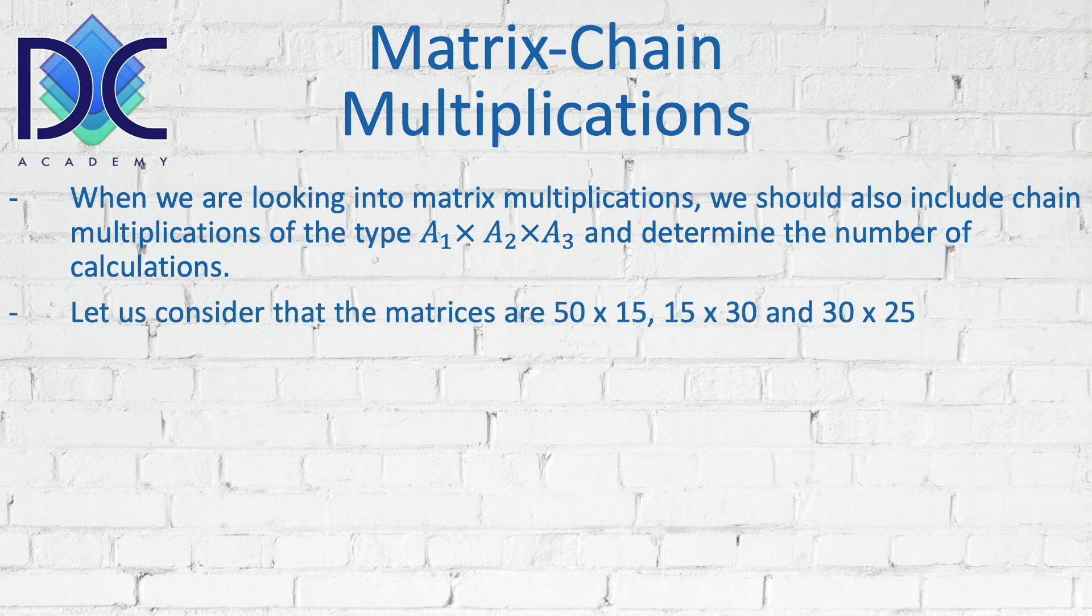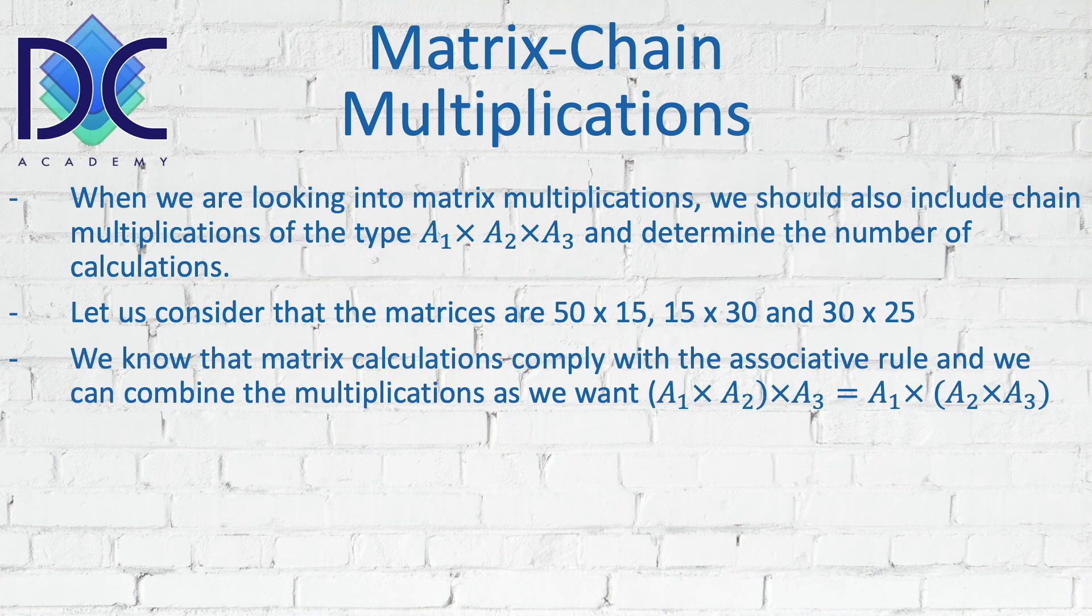And when we consider the matrices: A1 to be a 50 times 15, A2 a 50 times 30, and A3 a 30 times 25. By the multiplication of A1, A2, and A3, we will get finally a 50 times 25 matrix. Now we know that the matrix calculations comply with the associative rule, and we can combine the multiplications as we want.